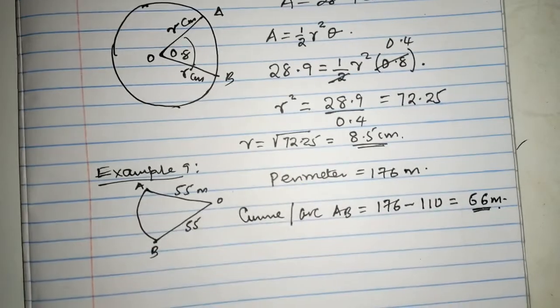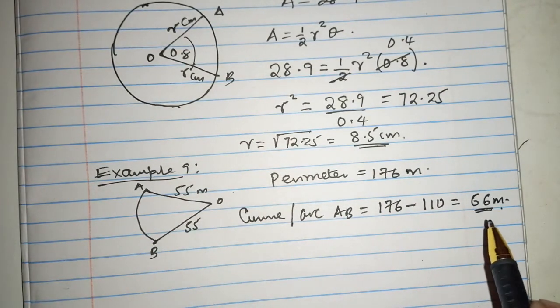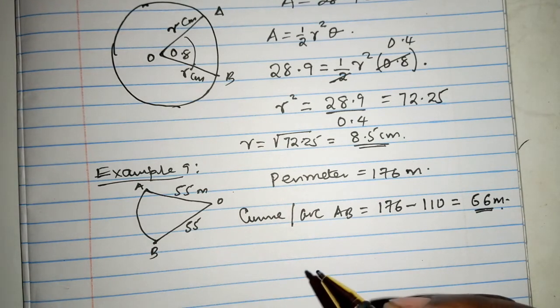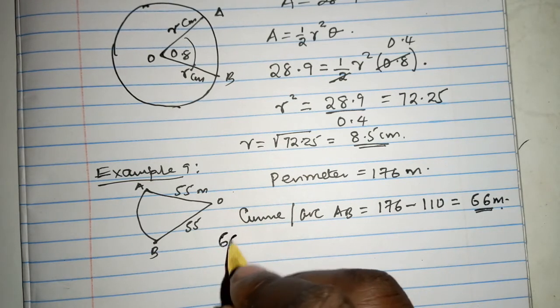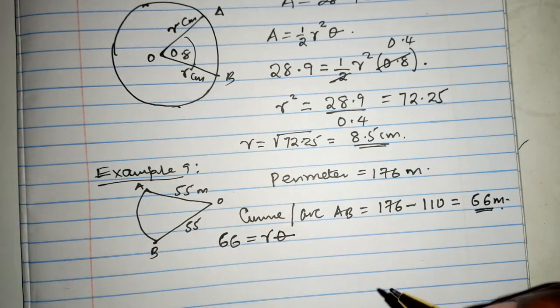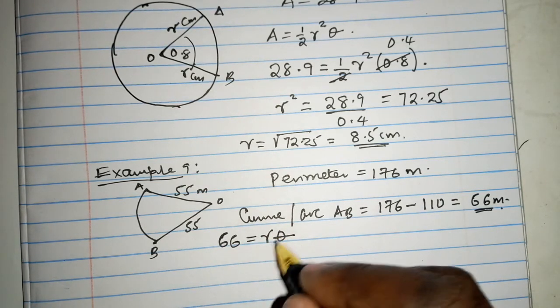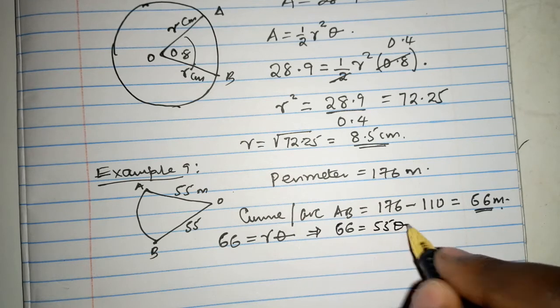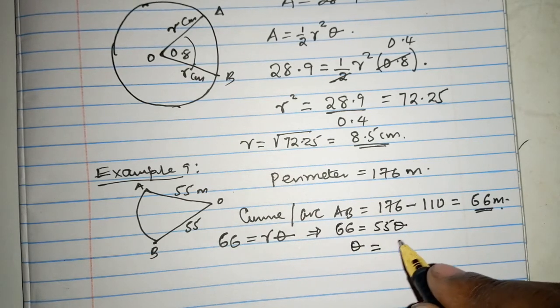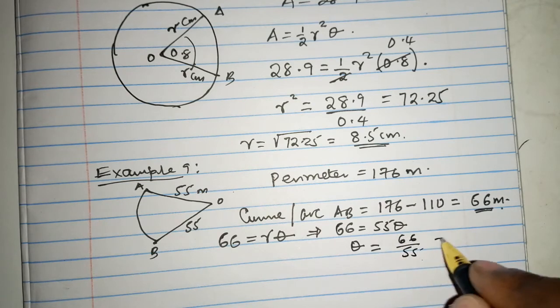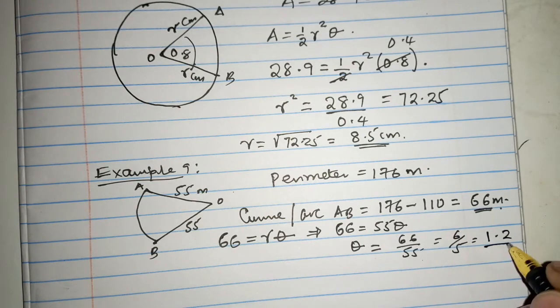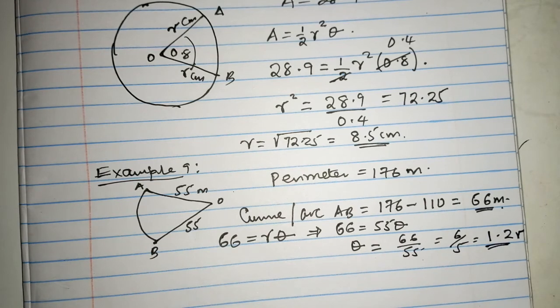The arc AB is basically 66 meters. But previously, we have understood the arc length using radians. And we know that 66 is given by R theta. And we need to find the value of theta because we have the R. So, this talks of 66 is 55 theta. And it goes without saying that theta is 66 over 55, which is basically 6 over 5. And there we are, 1.2. This is 1.2 radians. So, the angle at the center is 1.2 radians. We have found it.